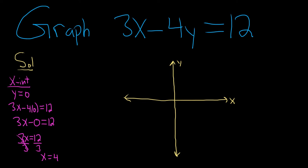We end up with x equals 4. Now we have an ordered pair. Our x is 4 and our y is 0. That would be our x-intercept, (4, 0). You can just come over to the graph and from the origin, you go right 4 and up 0, and then you put a dot.